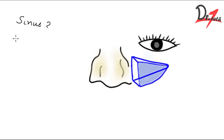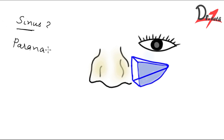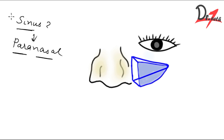So what is a sinus? A sinus is any cavity, any space — you can imagine a space here, and that is a sinus. Now what is a paranasal sinus? 'Para' means around, and 'nasal' means nose. So the sinuses which are around the nose are the paranasal sinuses.